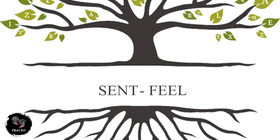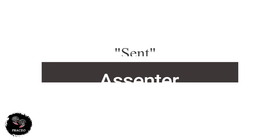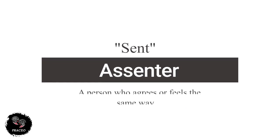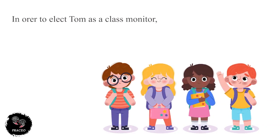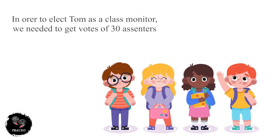The first word is assenter. It is a person who agrees or feels the same way. For example, in order to elect Tom as a class monitor, we needed to get votes of 30 assenters.